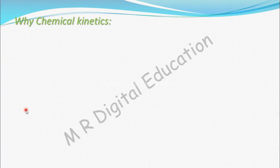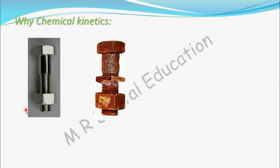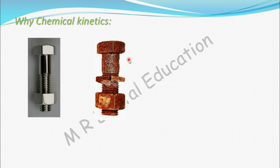Let's see why we have to study chemical kinetics. You may have seen rusting of iron — here, a bolt is getting rusted. The study of chemical kinetics tells us at what rate this bolt gets rusted, at what extent the bolt will get rusted, and by increasing the temperature, how much the rate will increase. The rate or speed of this reaction is what chemical kinetics deals with.